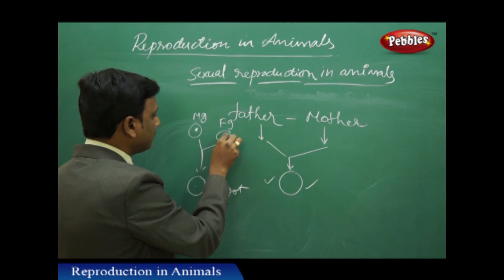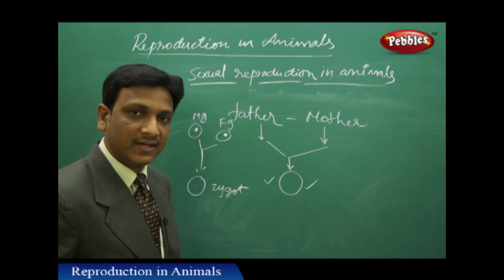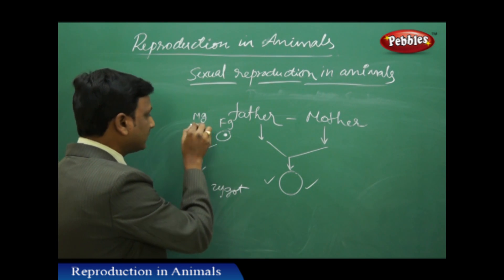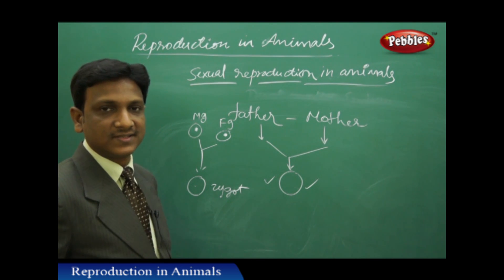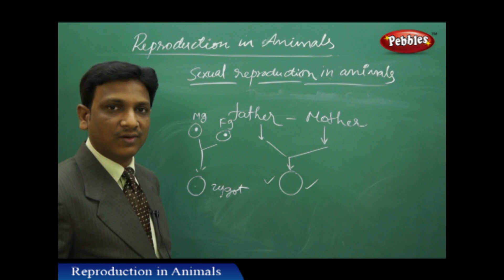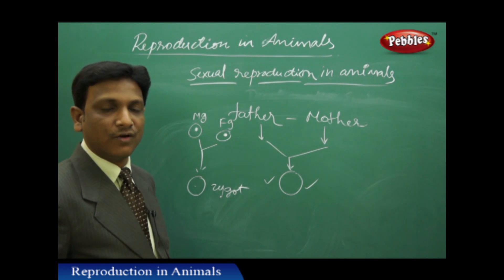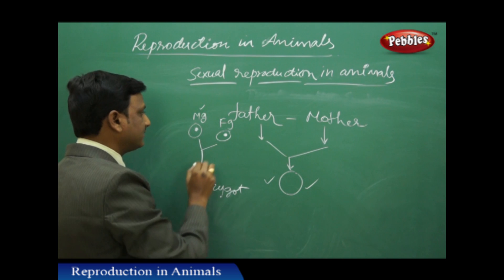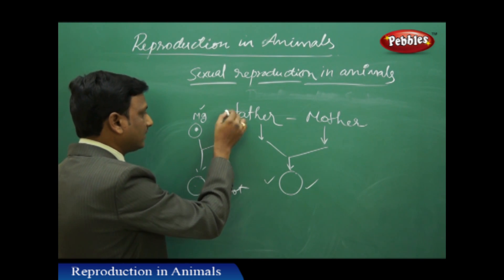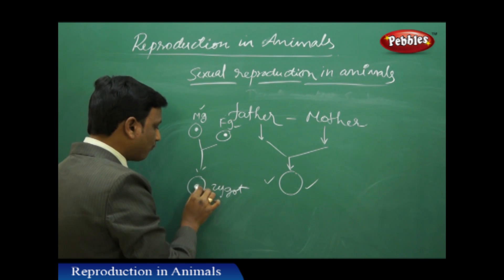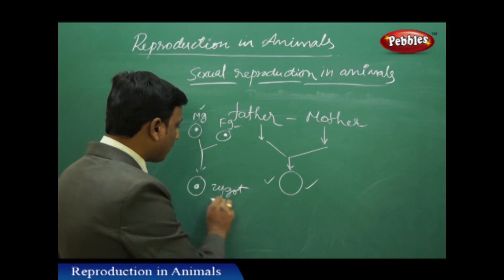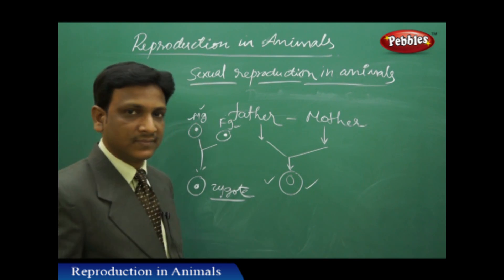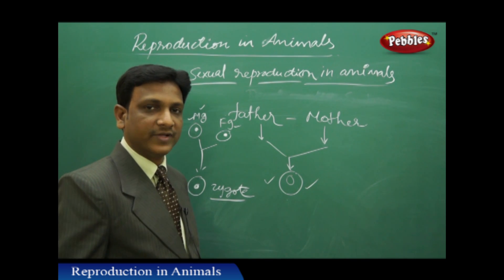Both the male and female gametes have a nucleus, and our characteristics are decided and preserved in the nucleus. The nucleus of the male gamete stores the characteristics of the father, just like a floppy disk, hard disk, or pen drive stores data in a computer. Similarly, the nucleus of the female gamete stores the characteristics of the mother. When these two nuclei combine to form a combined nucleus in the zygote, it possesses characteristics of both father and mother.